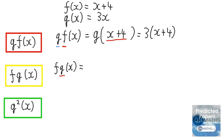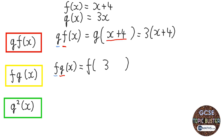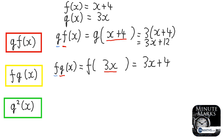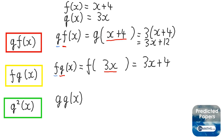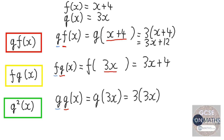For f of g of x, g is first. g of x is just 3x. Then f adds 4, giving 3x plus 4 — a completely different answer. For g squared of x, we apply g twice: first gives 3x, then times that by 3, giving 9x. Composite functions very rarely give the same answer when the order is switched.